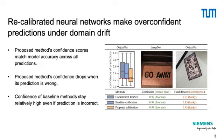Furthermore, only the uncertainty calibration method presented in this paper achieves confidence scores that match model accuracy across all predictions. The accuracy is indicated by the dashed red line in the boxplot diagram. All other approaches are overconfident under domain shift.